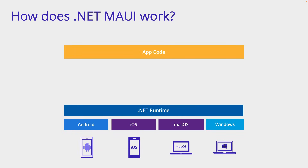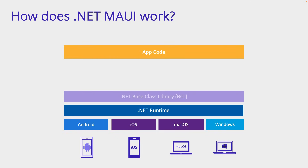For iOS, macOS, and Android, this still uses Mono, and it uses Core CLR on Windows. Next, we need a common .NET API we can write our code against, and that's the Base Class Library, or the BCL. New in .NET 6 is that all app runtimes — Mono and Core CLR — use the same BCL.